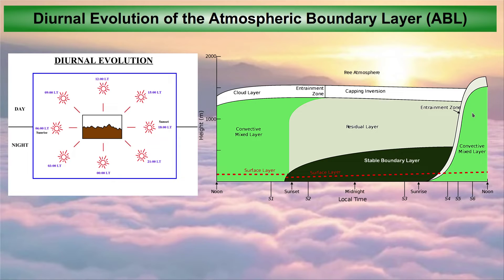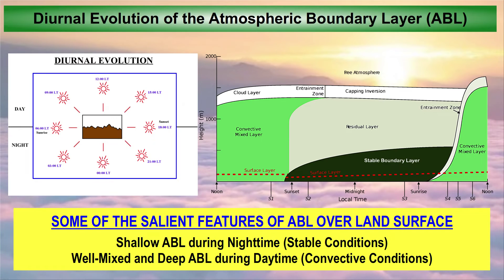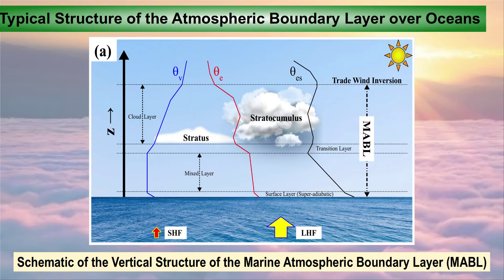In the daytime, the boundary layer can go as high as three to four kilometers over deserts. The lowest part of the atmospheric boundary layer is called the surface layer, where the turbulent fluxes of momentum, heat, and moisture remain approximately constant. The salient features of ABL: it is shallow during nighttime due to stable conditions, and well-mixed and deep during daytime due to convective conditions. When we take the same things over the ocean — the marine atmospheric boundary layer — the diurnal evolution is generally suppressed and daytime mixed layer heights will be sufficiently lower than over land.